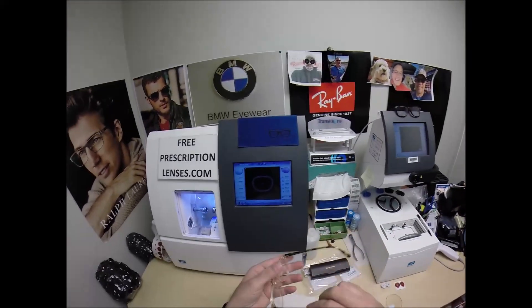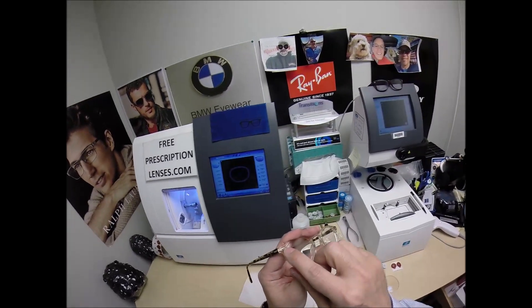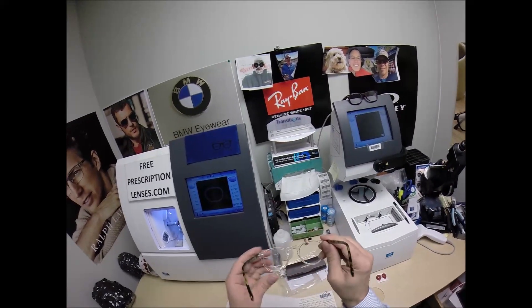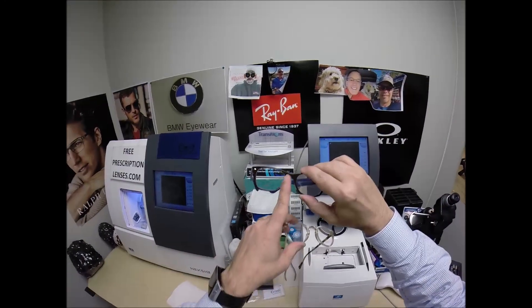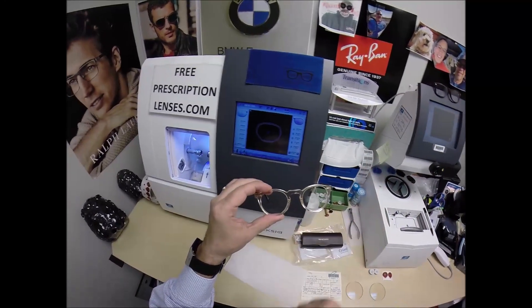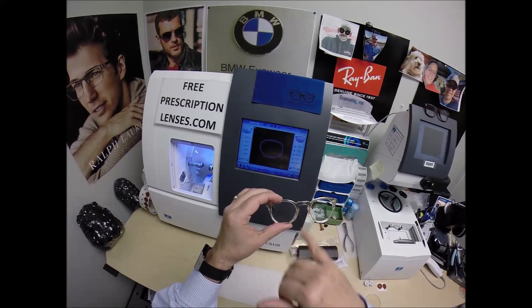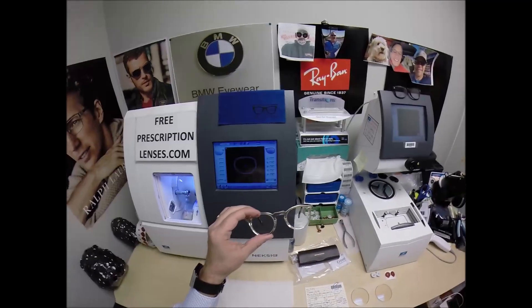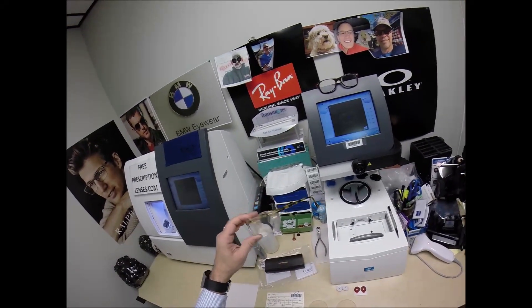Very well made frames, incredible hinges. You can see the front side of the rivet there, super great quality. The keyhole bridge, whereas this is more like a saddle bridge, this is called a keyhole because the older homes had a skeleton key for the door. Classic styling, you just can't go wrong with this frame.